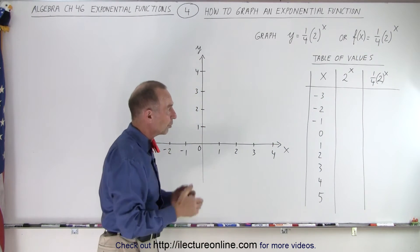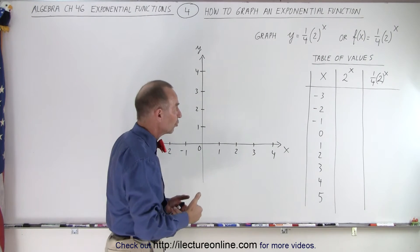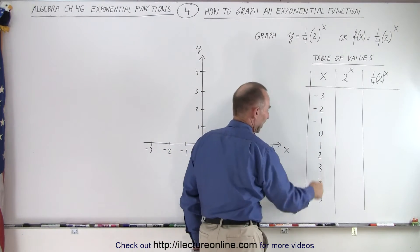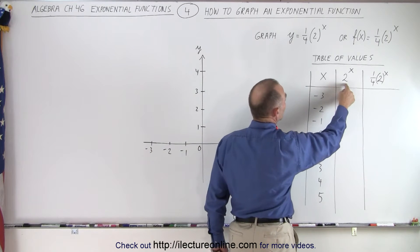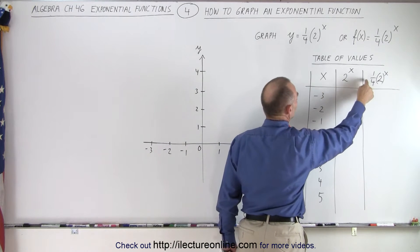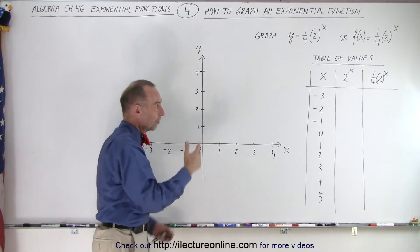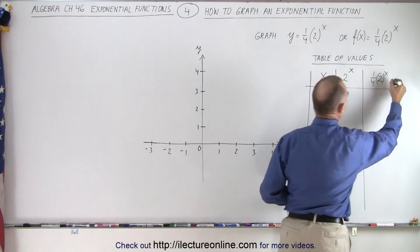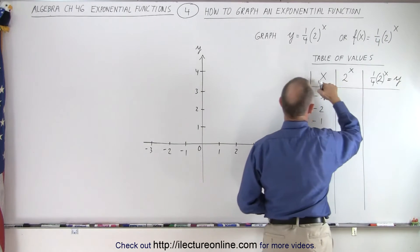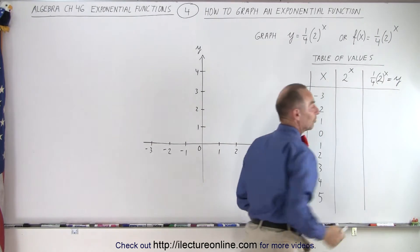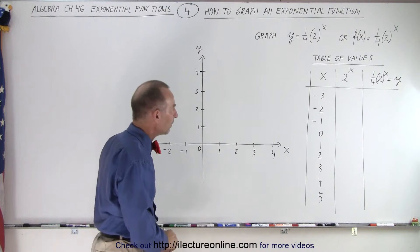The way to graph it is to draw a table of values. We start out by plugging in certain values for x, then we find out what 2 to the x is, and then we find out what 1 quarter times 2 to the x is. Then we plot those points because essentially this is equal to y. So for particular values for x, we'll get specific values for y for the function of x.